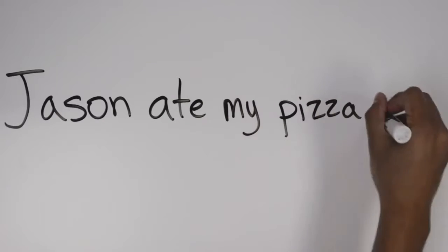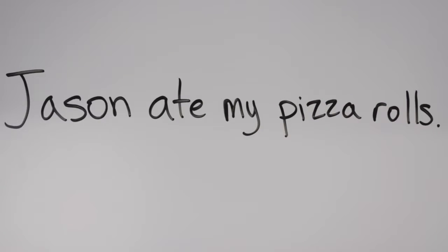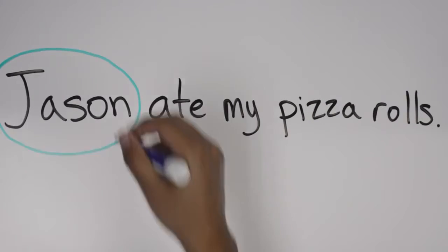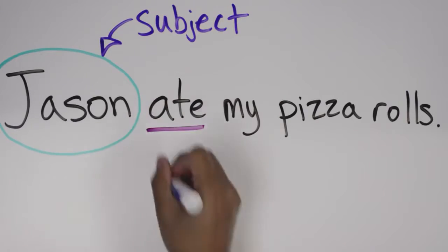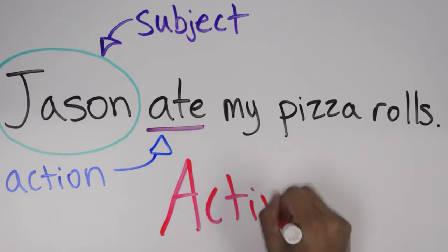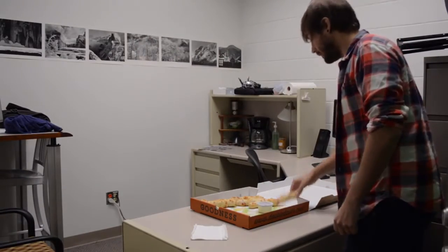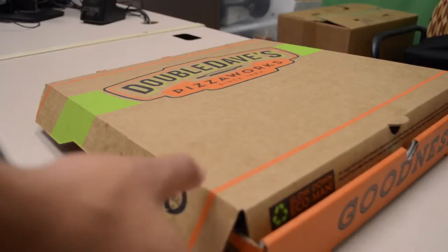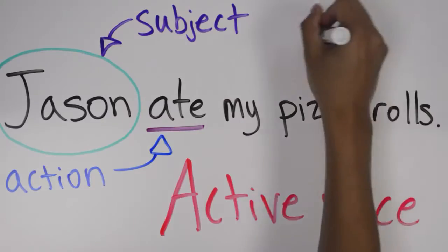There are other situations that benefit from the use of active voice. For example, Jason ate my pizza rolls. If the actor performing the action is important and known, you can use active voice. If you were upset at Jason, you would want to make him the grammatical subject of the sentence. I know I would.